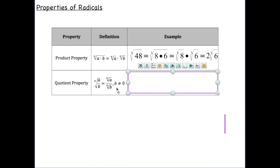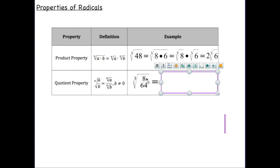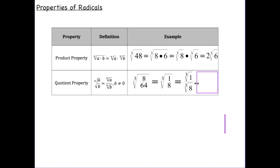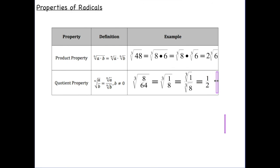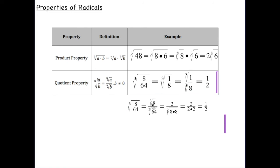For the quotient property, make sure your base is not zero to avoid undefined values. If we have the cube root of eight over sixty-four, you can simplify eight and sixty-four to get one-eighth, then take the cube root of one and the cube root of eight separately, giving one-half. Alternatively, taking the cube root of eight gives two in the numerator, and the cube root of sixty-four — since sixty-four equals eight times eight — gives two times two equals four in the denominator, so two over four equals one-half.